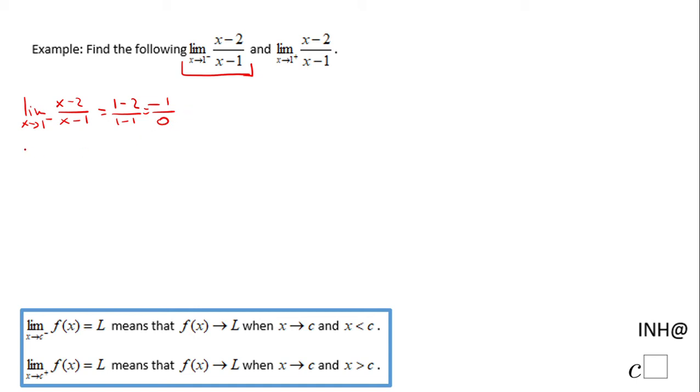For that reason I'm going to try x equals 0.9, a number less than 1. What we get here is 0.9 minus 2 over 0.9 minus 1. That will be negative 1.1 over negative 0.1. If we do this division, you're going to get 11.